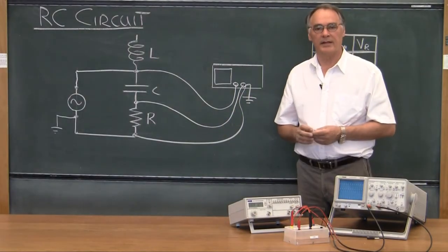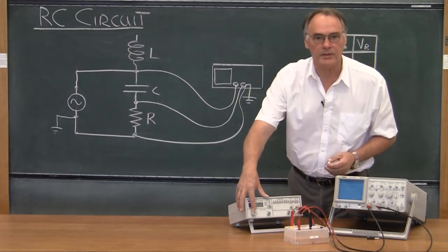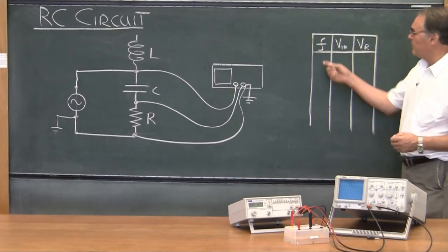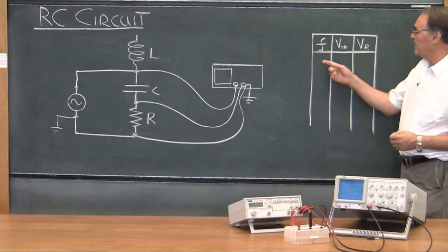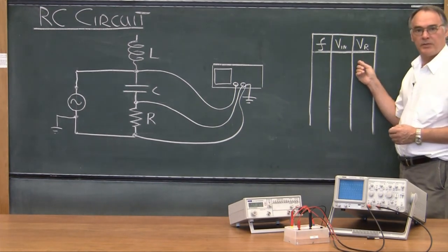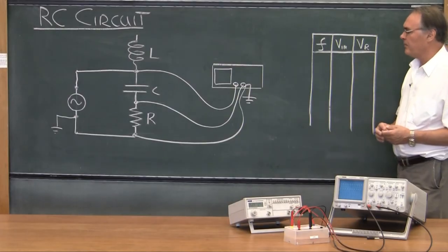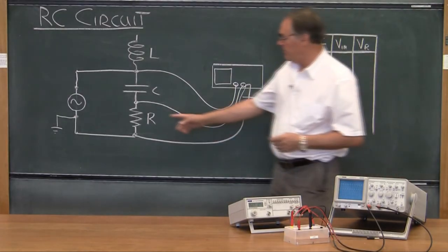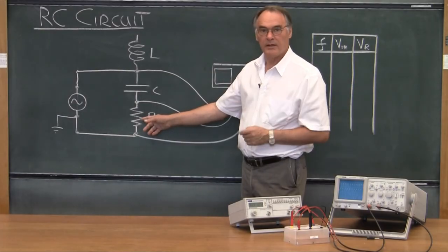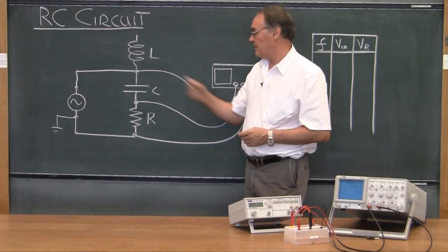Now to collect the data. What you're going to be doing is vary the frequency on the function generator and tabulate for different frequencies the input voltage as well as the resistor voltage. You'll use this family of readings as well as the value of that resistor, which you'll measure using a multimeter in the lab, to determine the capacitance.